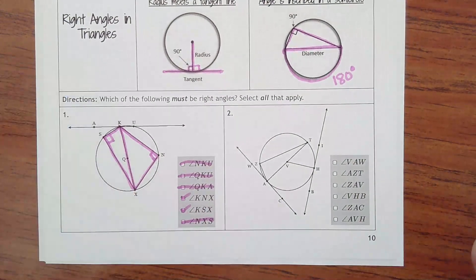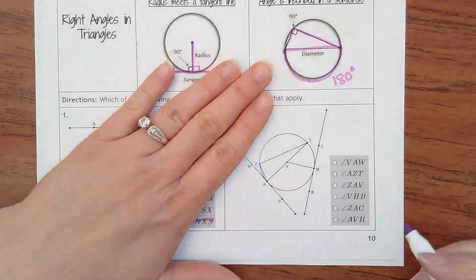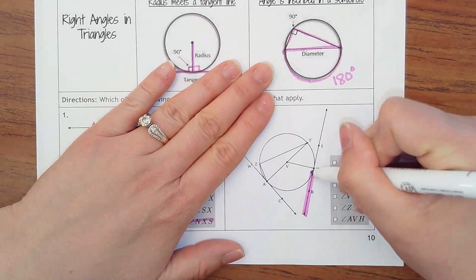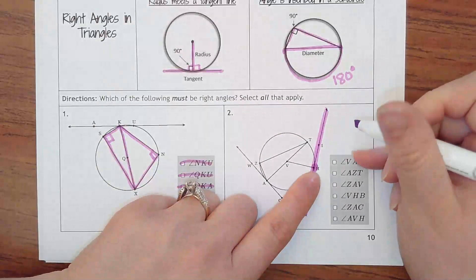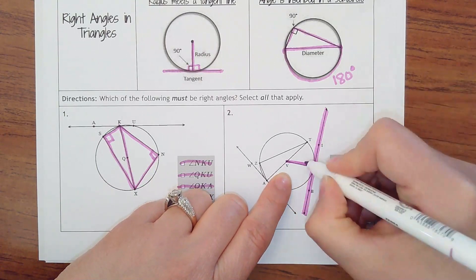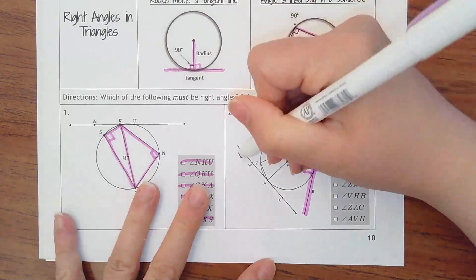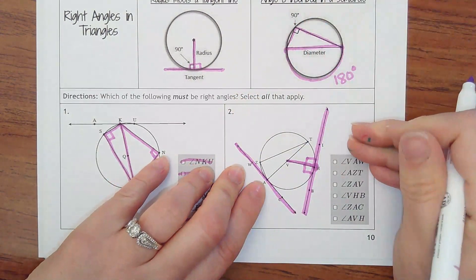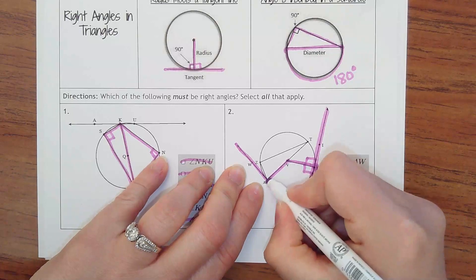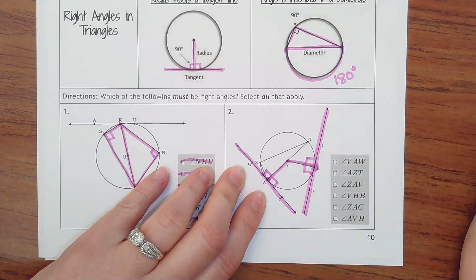All right, let's try problem number two. Kind of crazy to look at it first, but I would start with where are any tangent lines? I happen to see one right here because the point of tangency is at H and it's meeting a radius. And so that creates a right angle here and here. I'm seeing another tangent line here, line WC, and it touches at point A and it meets there with the radius. And so here and here would be a right angle.